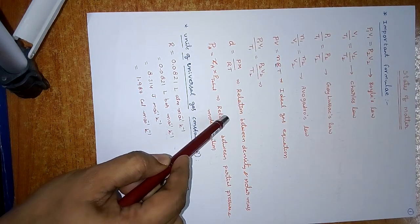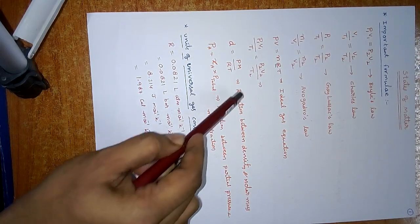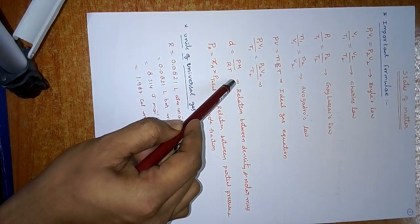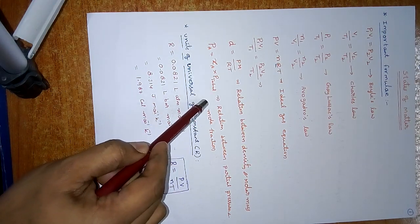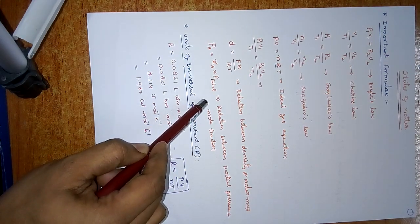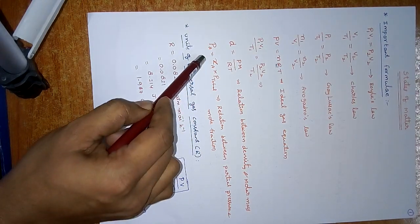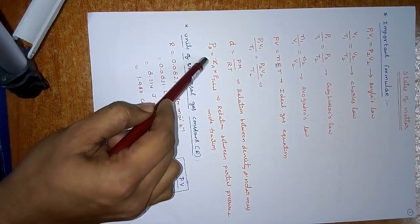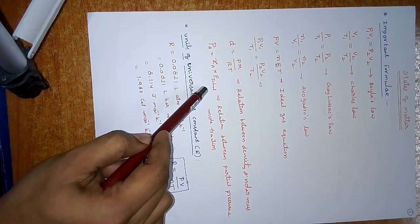Combined gas equation: P1V1/T1 = P2V2/T2. Next, the relation between density and molar mass: density = PM/RT. And the relation between partial pressure and mole fraction: partial pressure = mole fraction × total pressure.